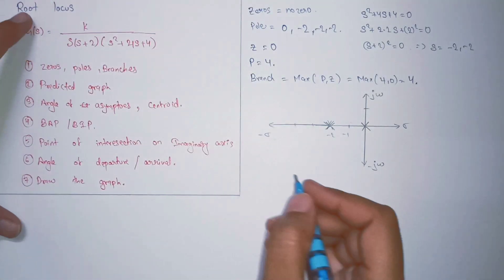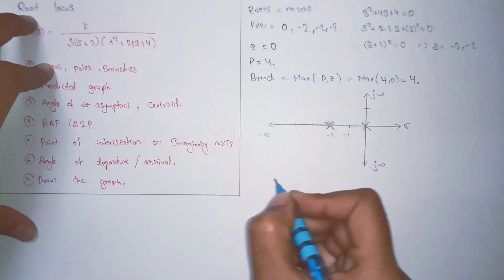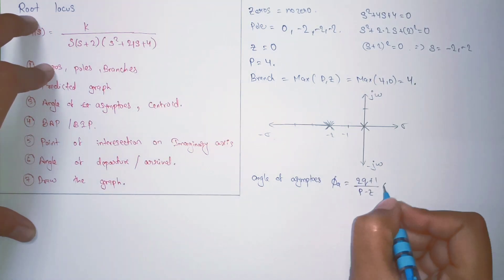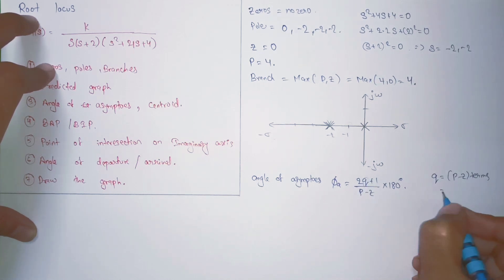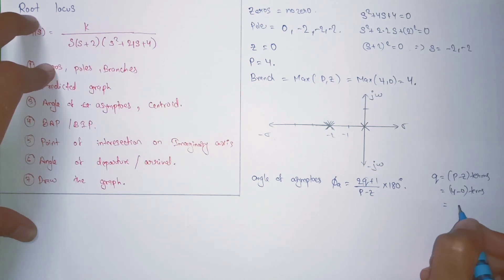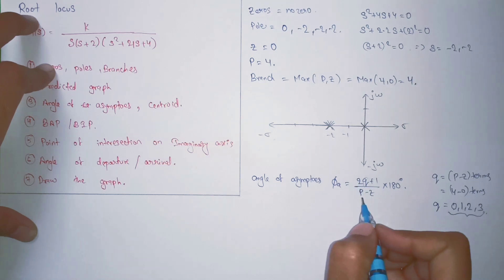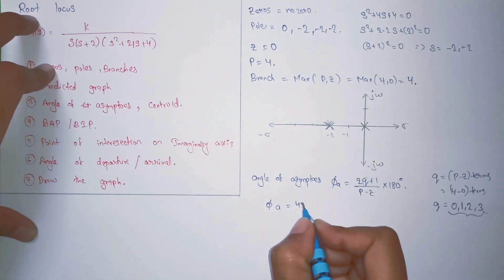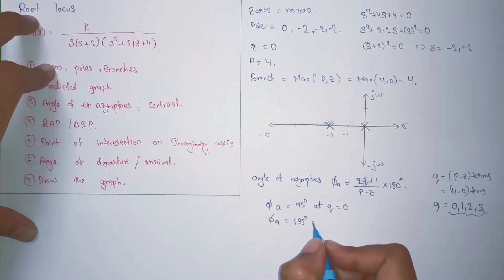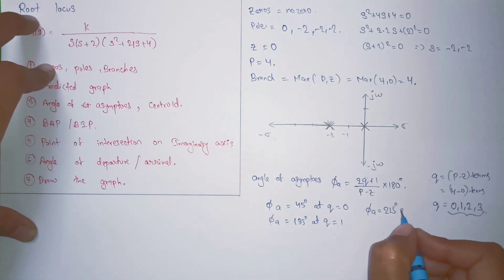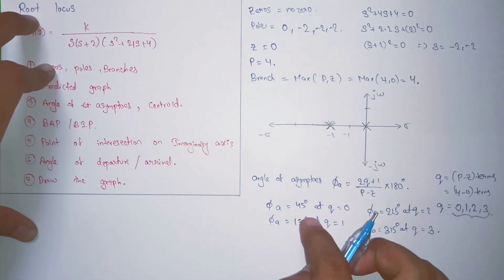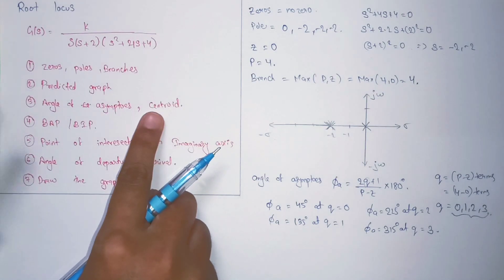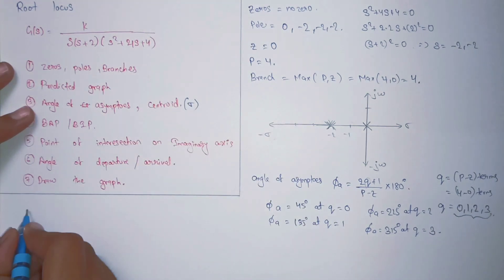Now we will calculate the angle of asymptotes and centroid. For angle of asymptotes the formula is: (2q + 1) / (P − Z) × 180 degrees. The q value goes from zero to P − Z terms, which is four minus zero = four terms, starting from zero: 0, 1, 2, 3. Substituting each value, we get angles of 45° at q=0, 135° at q=1, 225° at q=2, and 315° at q=3. So we have four angle of asymptotes.